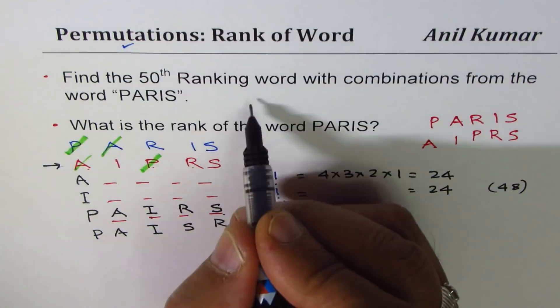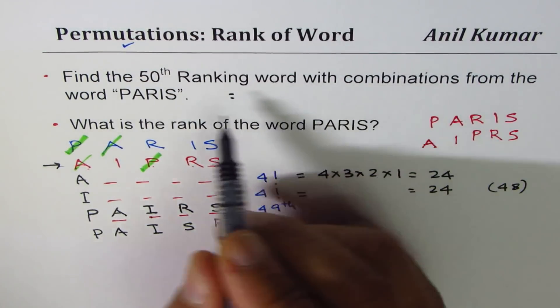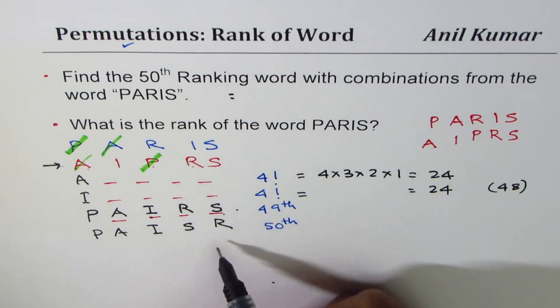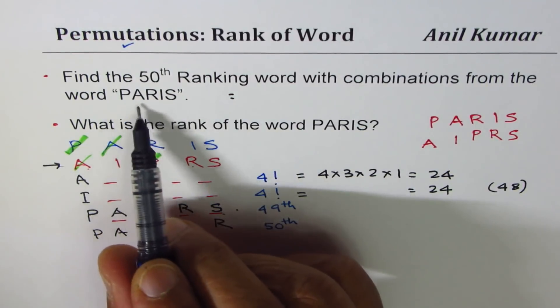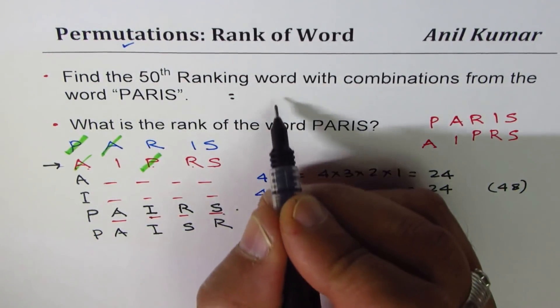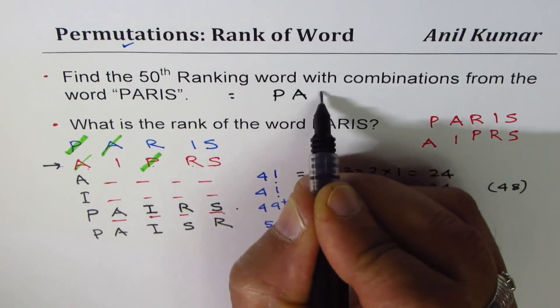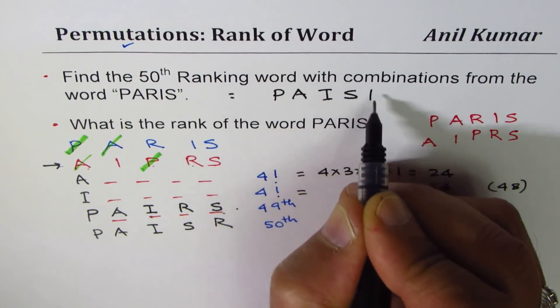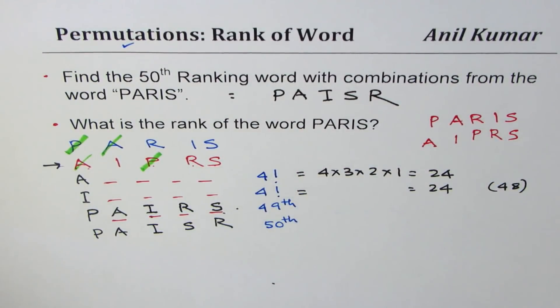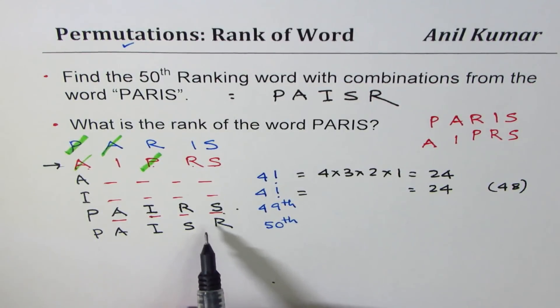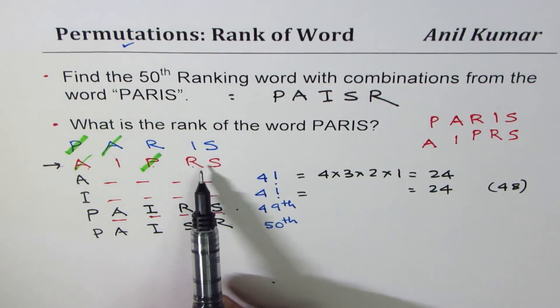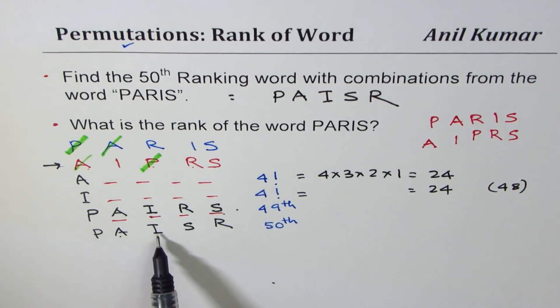We have got answer for the first part. And that is the 50th ranking word using the letters from P, A, R, I, S is P-A-I-S-R. Now with that, we have exhausted all the words starting with P, A, I.